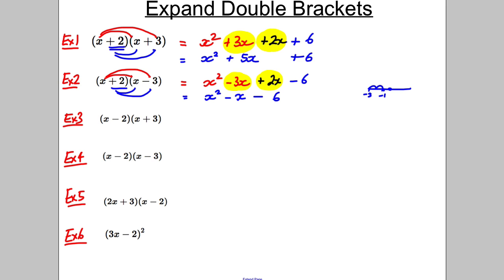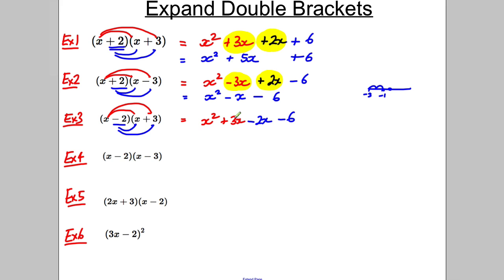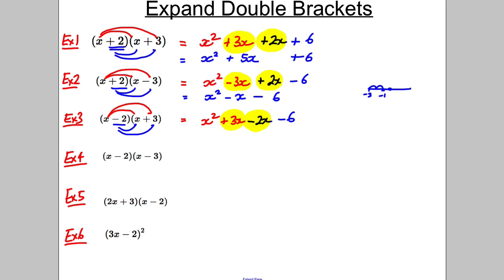The next one is similar to the two above, apart from the negative on the 2. So: x multiplied by x, x multiplied by positive 3, then negative 2 multiplied by x and negative 2 multiplied by positive 3. That gives x squared, positive 3x, negative 2x, and negative 6. Combining like terms — positive 3x and negative 2x gives positive 1x — so the result is x² + x − 6.